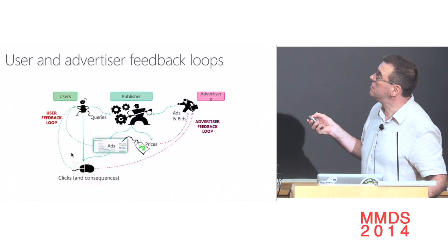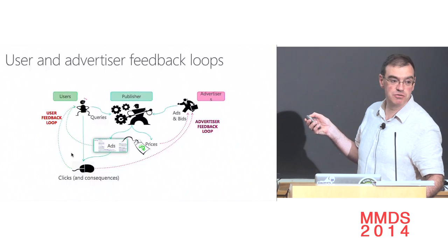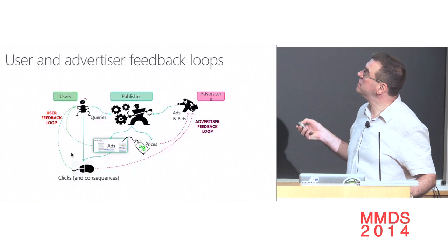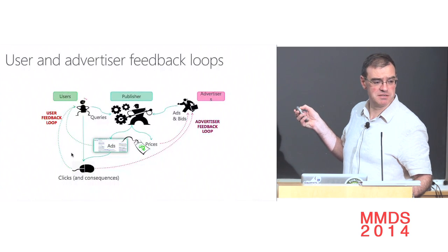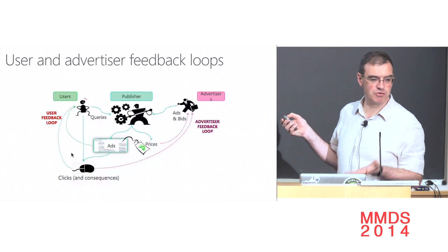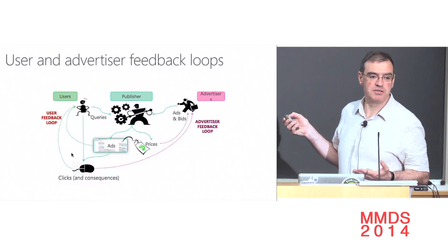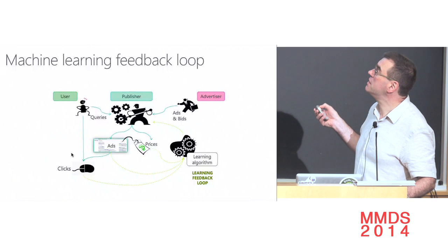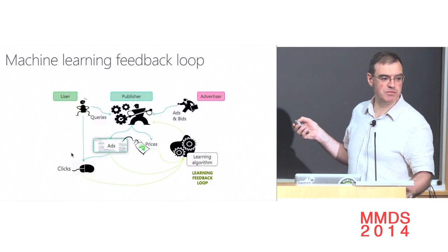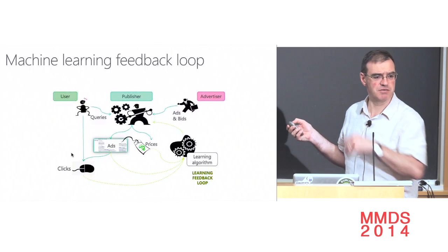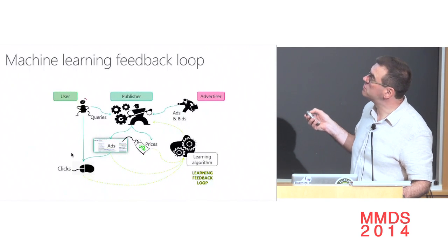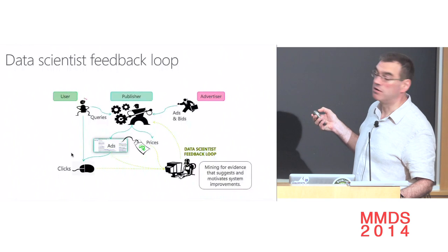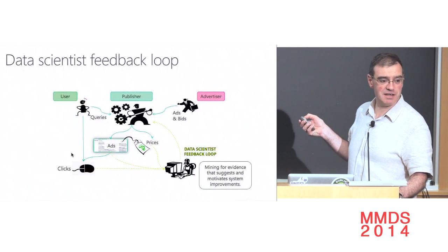The ads you show are going to have an impact on what the user will do in the future. If you keep annoying the user with bad ads, they're going to go away or learn to ignore them. They're also going to have an impact on advertisers and their future bids, because if they receive clicks from users who don't buy anything, or don't receive enough clicks, they're not going to bid much. You also have a lot of machine learning algorithms that take the data generated by the system — queries, ads, clicks, prices — and try to update the various models that drive the engine.